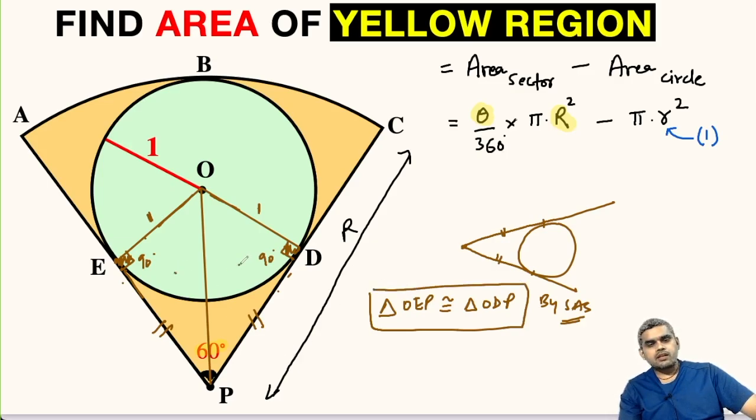If these two triangles are congruent, then this angle must be equal to this angle. Overall the angle is 60 degrees, so each angle must be 30 degrees.